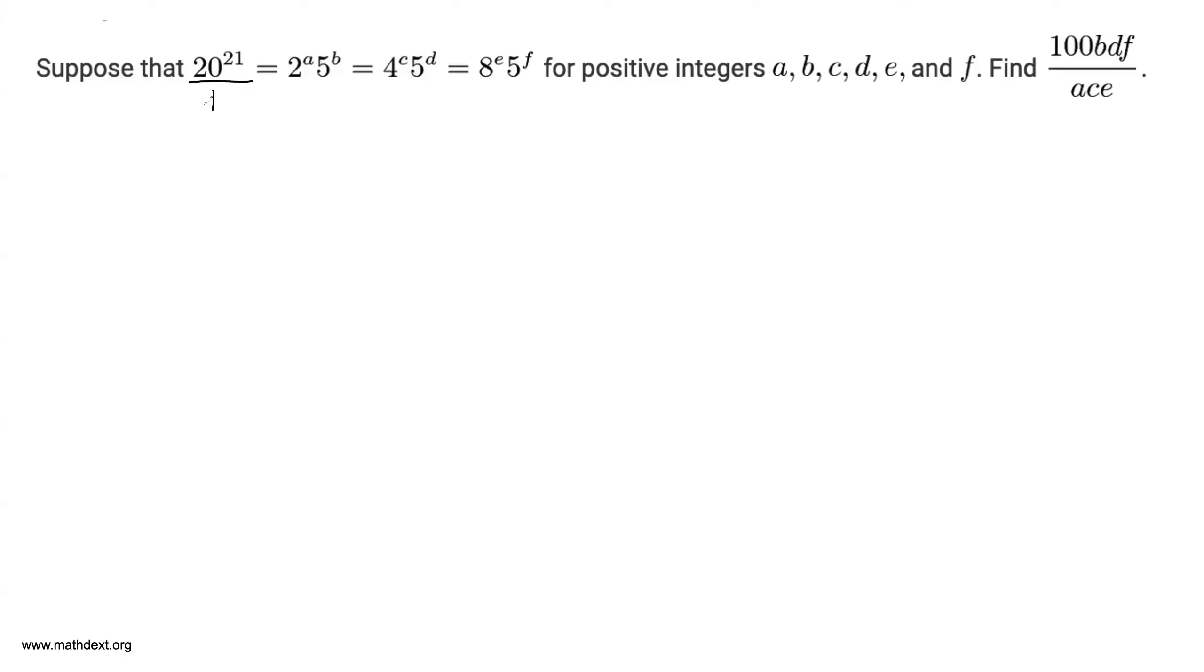So 20 to the power of 21 is equal to 2 to the power of 42 times 5 to the power of 21, since this is equal to 2 squared times 5 to the power of 21. So we already have a equals 42 and b equals 21.